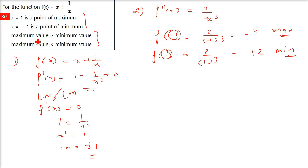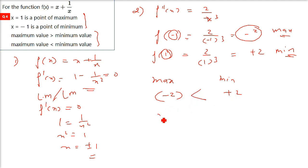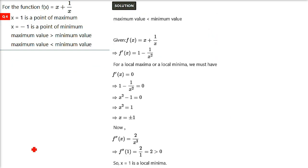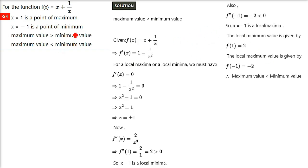f''(−1) gives negative 2, and f''(1) gives positive 2. Negative means maximum; positive means minimum. So at x equals minus 1 we get a maximum, and at x equals 1 we get a minimum. The maximum value is negative 2 and the minimum value is positive 2, meaning the maximum value is actually less than the minimum value. Therefore option 3 is the correct answer.